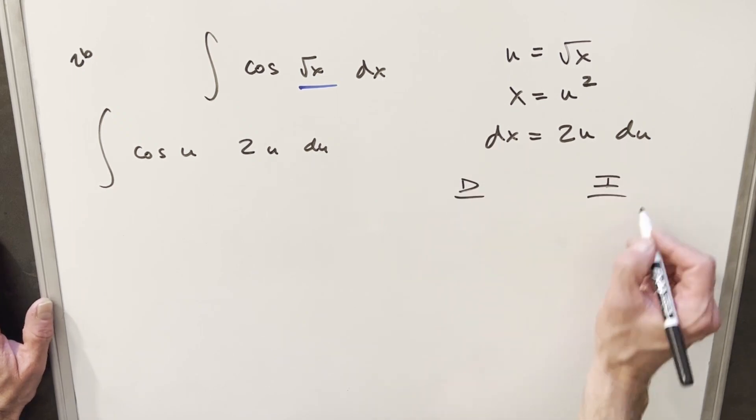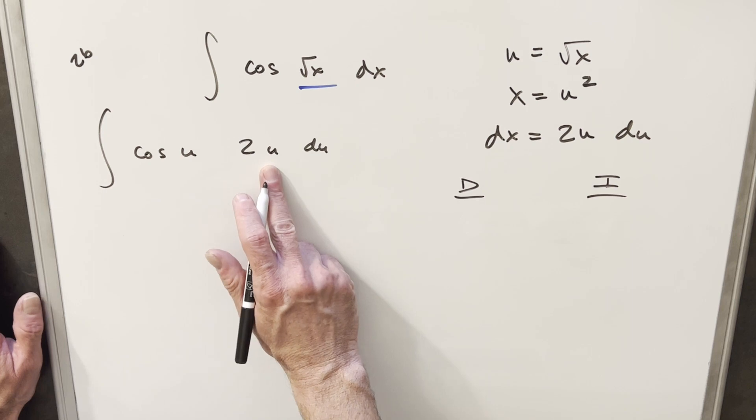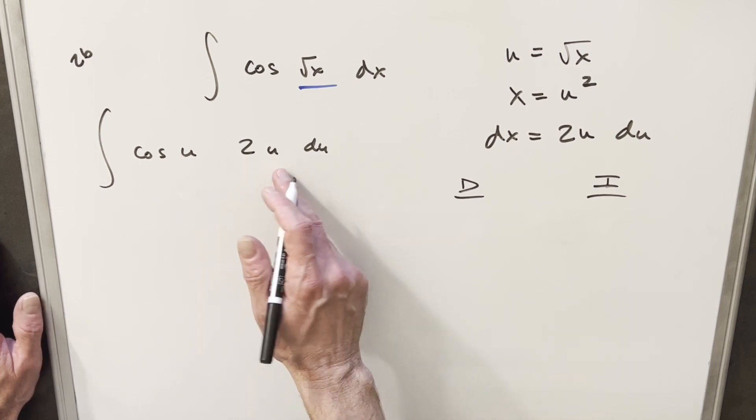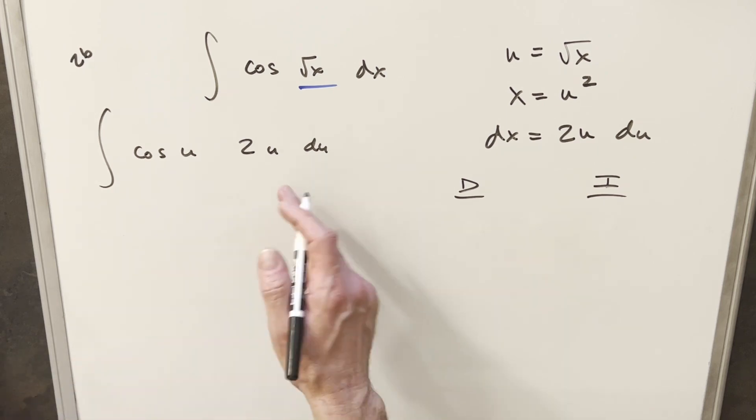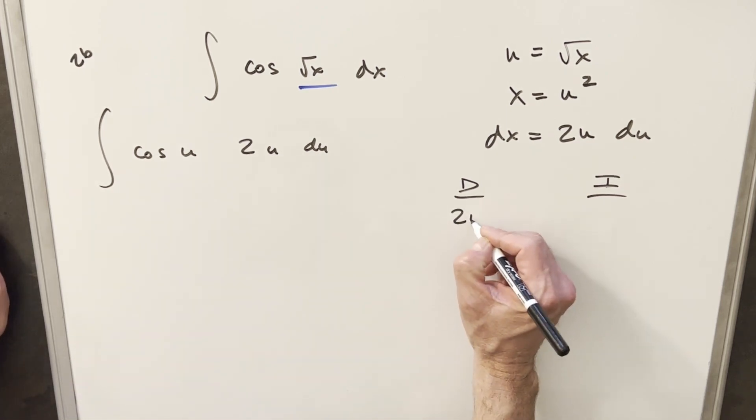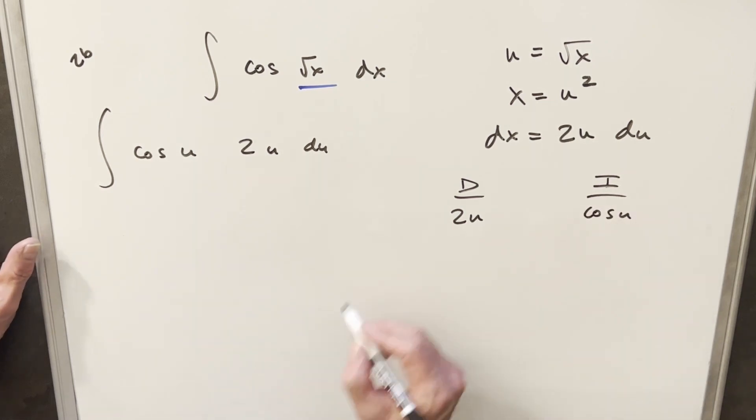So I'll create two columns, one to differentiate, one to integrate. I usually like to differentiate the polynomial or just the u term, because if I differentiate this, it's going to become a constant. Then it's going to differentiate to zero. So let's choose this to differentiate, and let's integrate cosine of u.